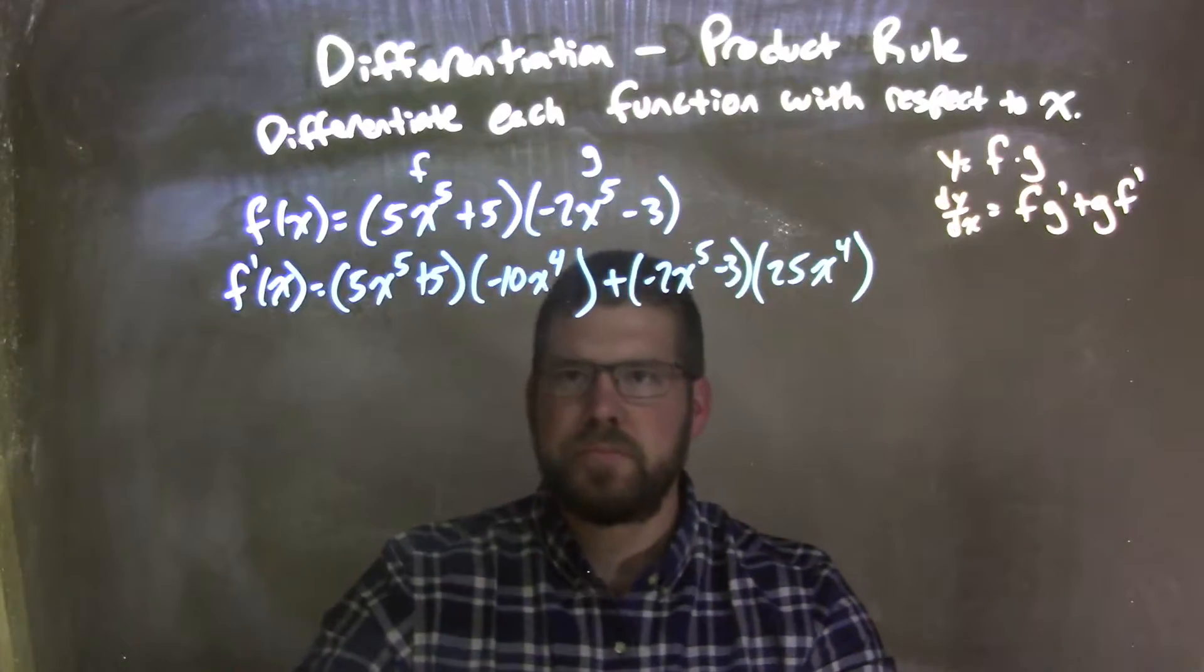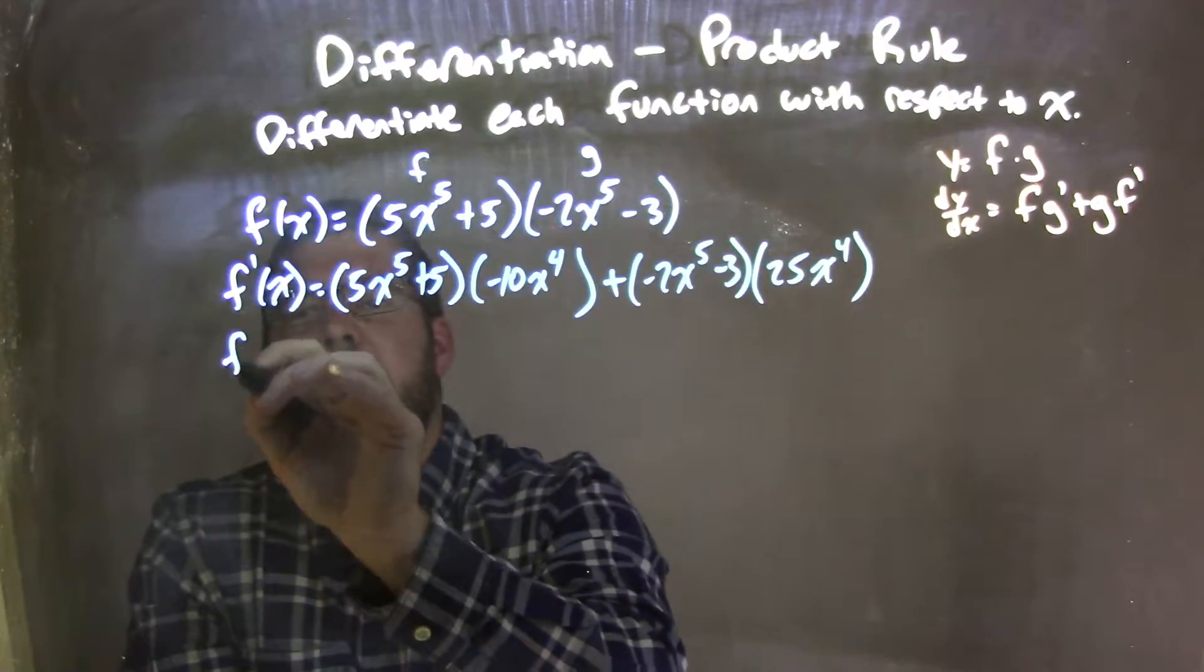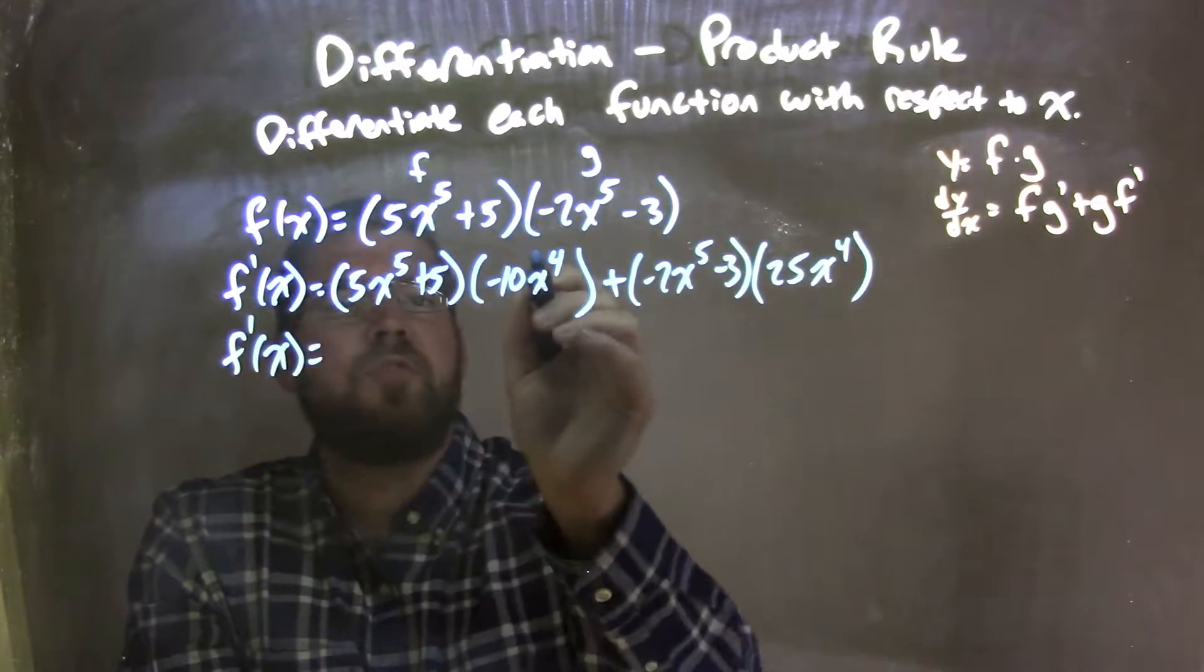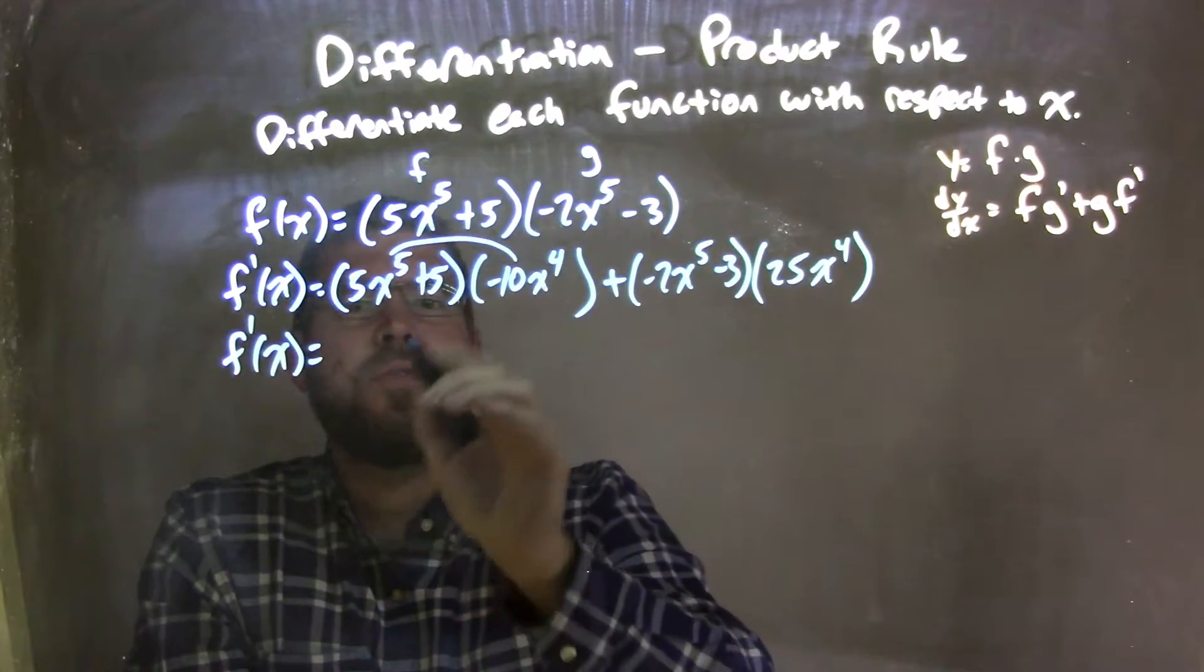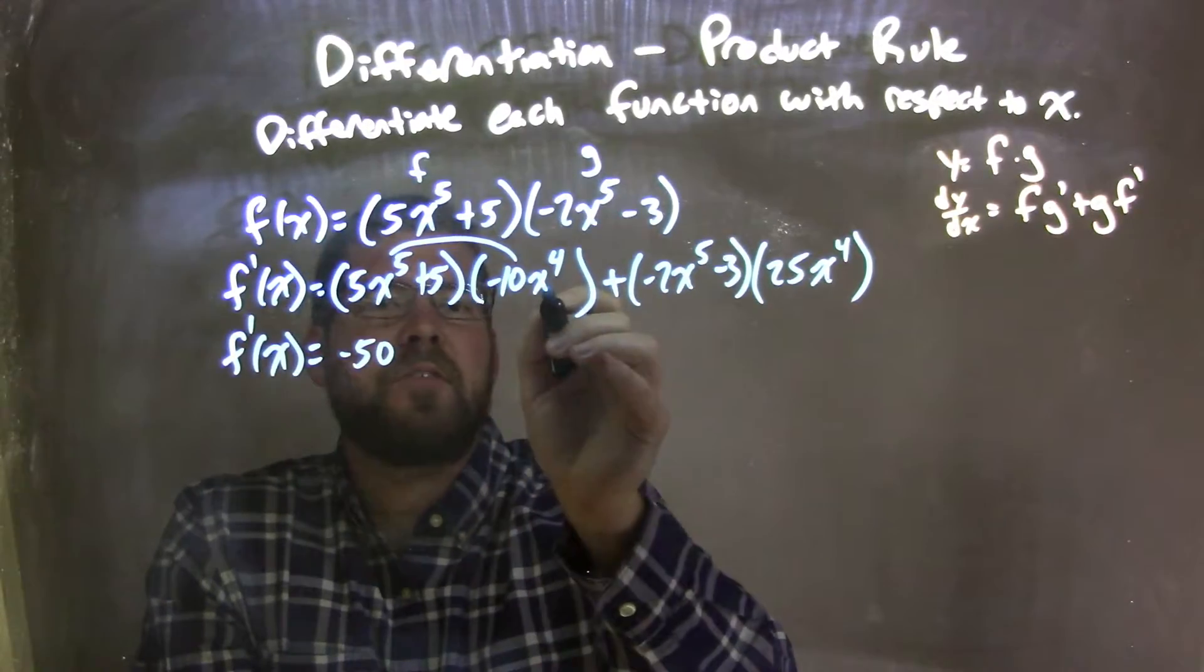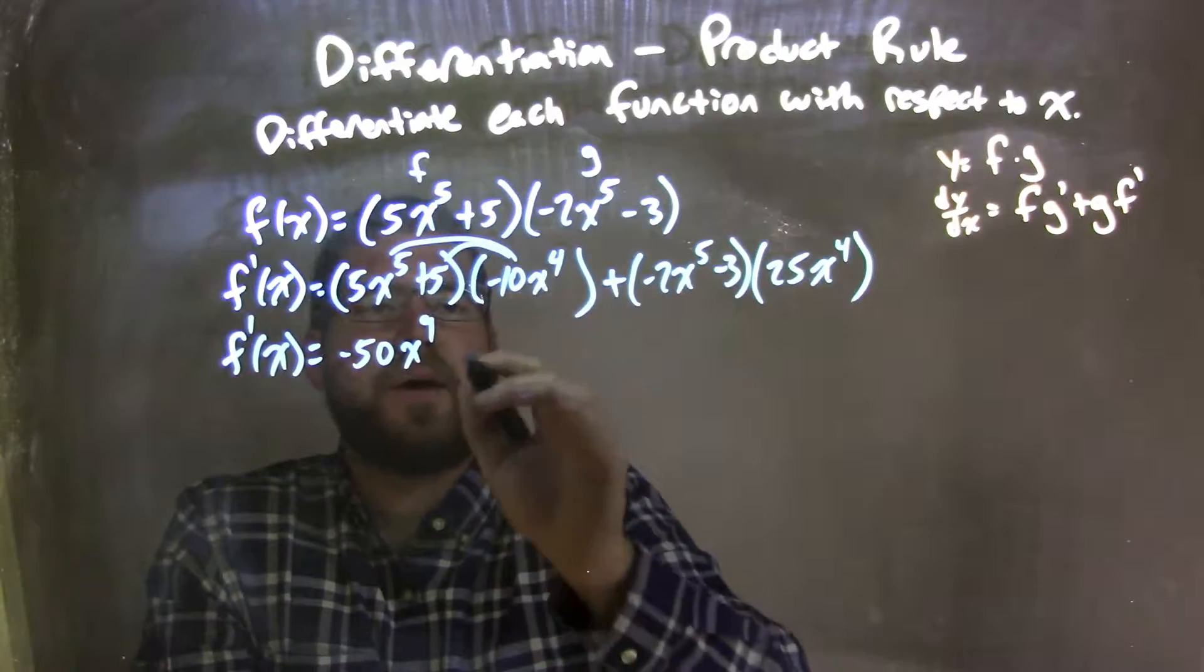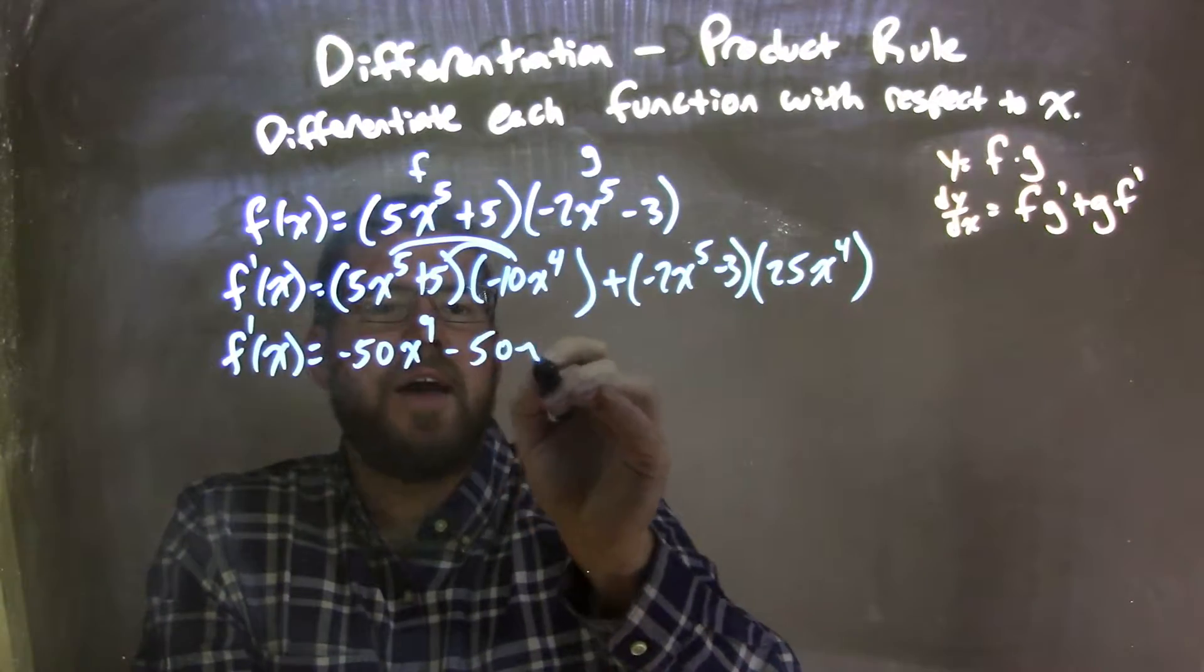Okay, so from there I need to simplify by distributing. So we have f prime of x. Distribute the negative 10x to the fourth, so negative 10 times 5 is negative 50. And x to the fourth times x to the fifth is x to the ninth. Distribute the negative 10 times the 5, which is negative 50x to the fourth.